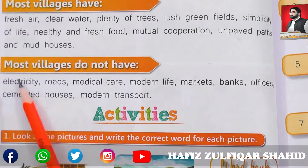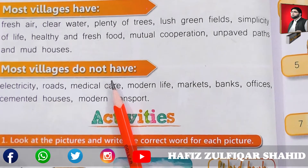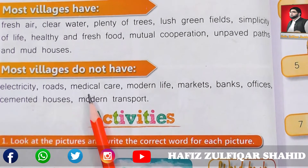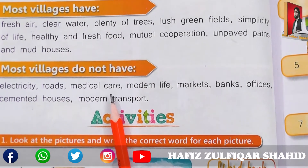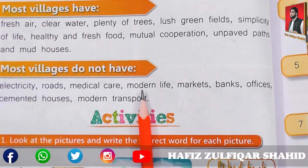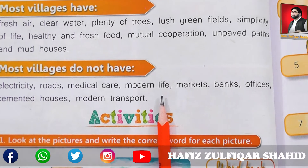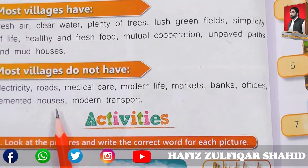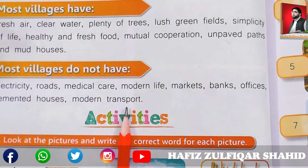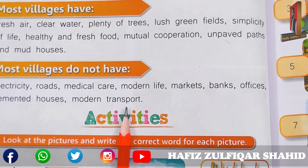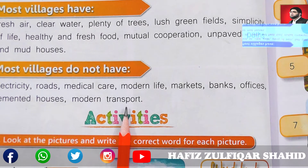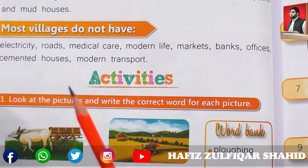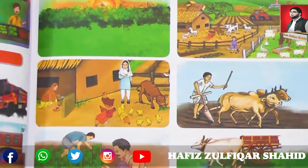Next: most villages do not have — bahut se gaon mein yeh kuch nahin hota — electricity — bijli; roads — sadkein; medical care such as hospitals; modern life — jadeed zindagi; markets — dukaanein; banks; offices; cemented houses; and modern transport like cars, buses, trains, aeroplanes, bikes. Such transport is very rarely seen in villages. Village transport includes tip carts and bullock carts.